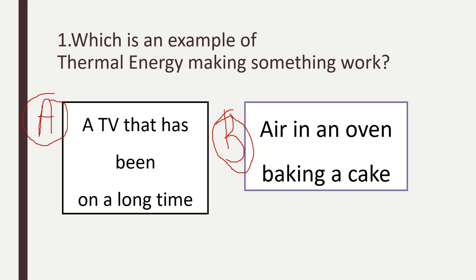A says a TV that has been on for a long time. Or B, using an oven to bake a cake. I can see that both involve thermal energy. A TV that has been on for a long time will get warm, but is that making something work? No. Letter B — using an oven to bake a cake — is thermal energy making something work? Yes, it's baking a cake. So the answer is letter B.